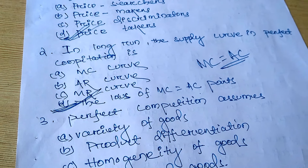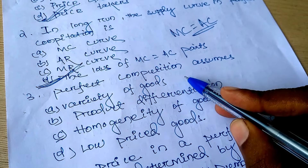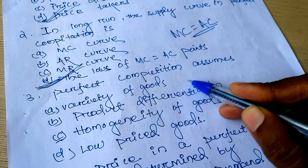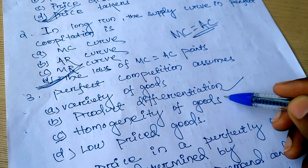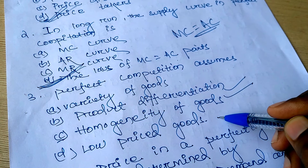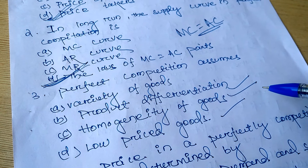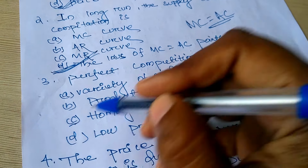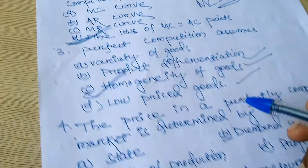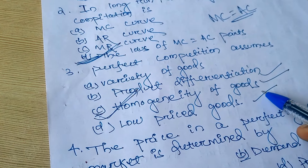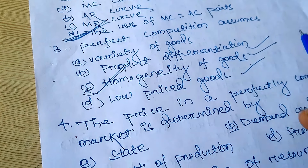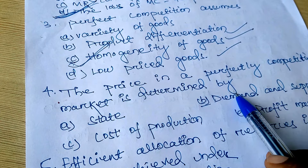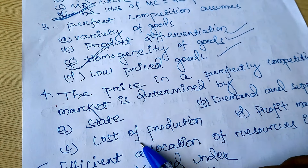Perfect competition assumes what? It assumes variety of goods, product differentiation, homogeneity of goods, and low price cost. You have to know that selling homogeneous goods is a characteristic of perfect competition, so homogeneity of goods is the correct perfect competition assumption.